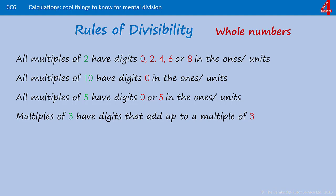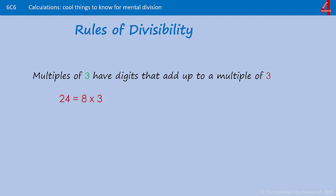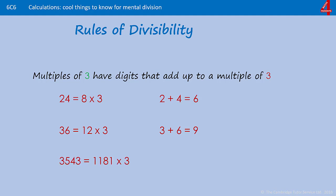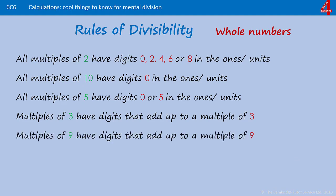Multiples of 3 have digits that add up to a multiple of 3. For example, 24 is 8 times 3. If you add the digits 2 and 4 in 24, you get 6, which is a multiple of 3. 36 is 12 times 3, and 3 plus 6 equals 9, which is a multiple of 3. For bigger numbers such as 3,543, add the digits: 3 + 5 + 4 + 3 = 15, and 15 is a multiple of 3. You could also add 1 and 5 to get 6, which you know is a multiple of 3.